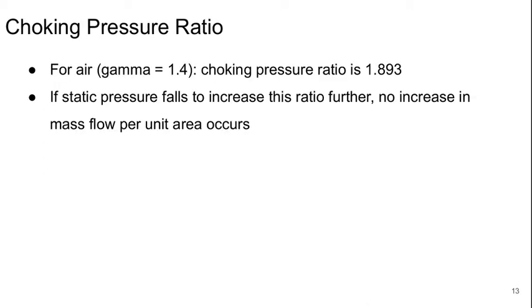If we work this out, basically we take P0 over P, put in Mach number equal 1, and gamma is 1.4, and we get 1.893 as our choking pressure ratio.